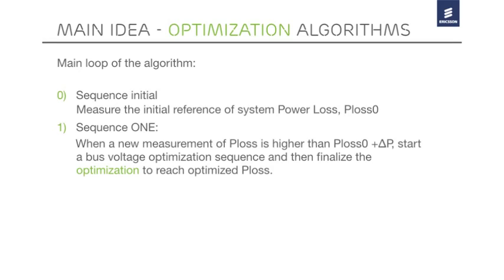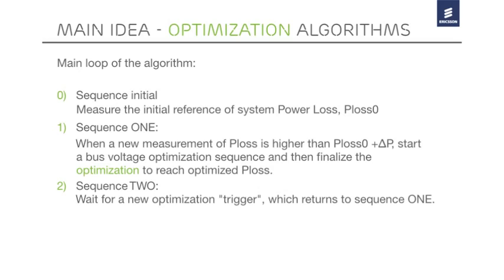we initiate the intermediate bus voltage optimization sequence by sending a command to the advanced bus converter. This triggers setting the bus voltage to an optimized value. When optimal PLOS is reached, we close this sequence. Once the first sequence is closed, the supervisor continues to monitor PLOS until delta P varies again to initiate a new optimization trigger. This executes an optimization loop until PLOS returns to the optimized value.